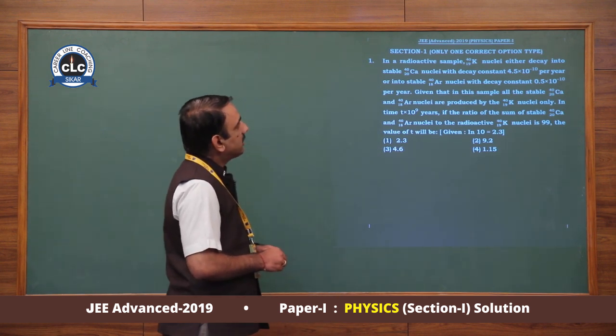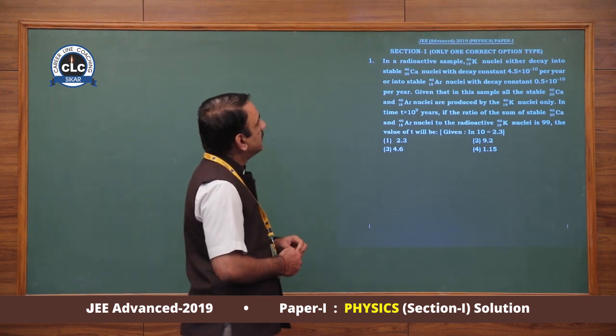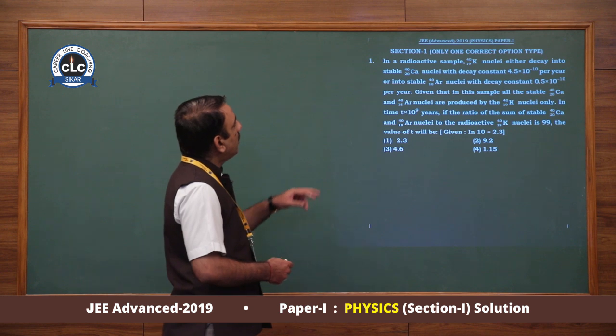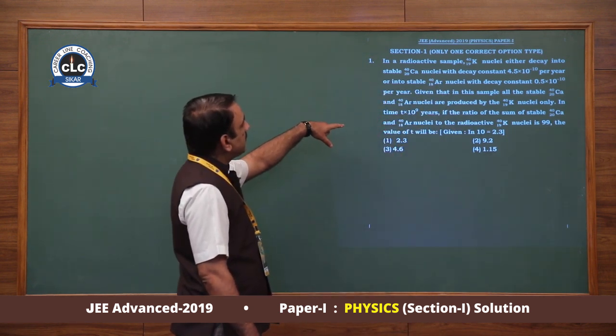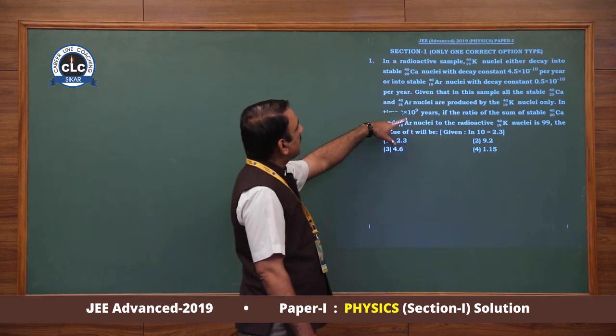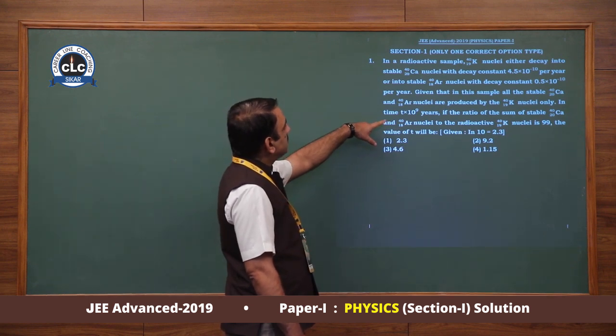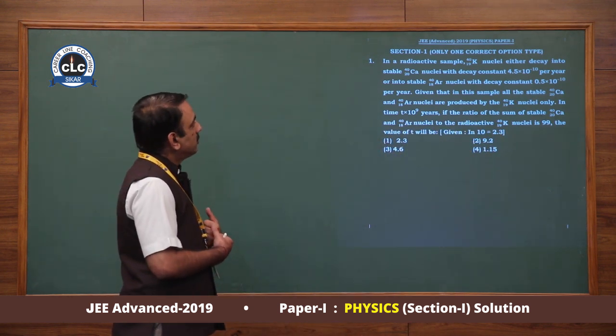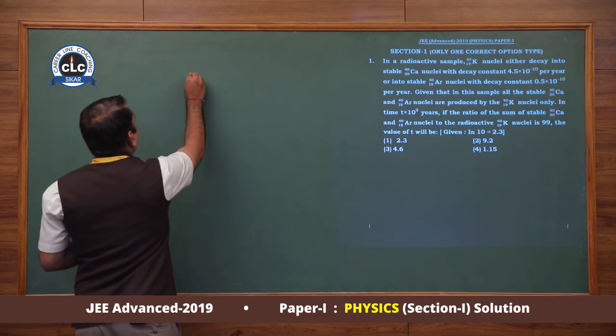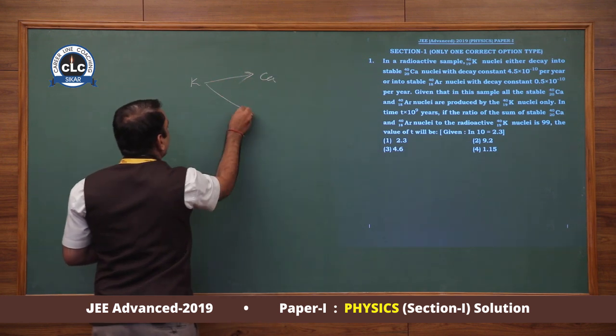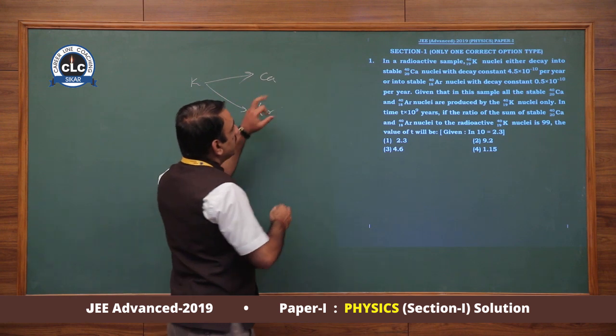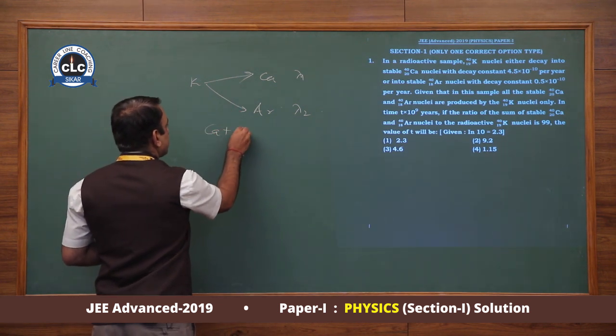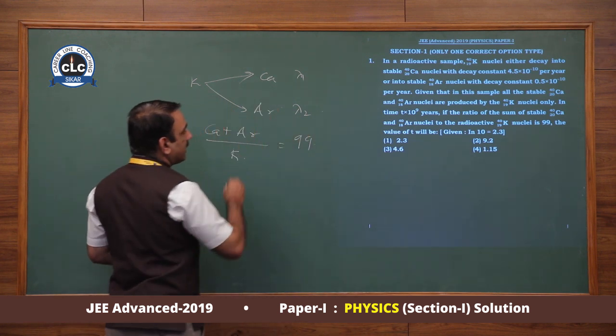The first question is nuclear radioactivity. In a radioactive sample, K40 nuclei either decay into stable Ca nuclei with decay constant lambda 1, or into stable Ar nuclei with decay constant lambda 2 per year. Given that in the sample all the stable Ca and Ar nuclei are produced by the K nuclei only. In time T, if the ratio of the sum of Ca and Ar nuclei to the radioactive K nuclei is 99, then the value of T will be what? So basically we have the radioactive element K, which decays to Ca and Ar with decay constants lambda 1 and lambda 2, and the ratio is given as 99 to 1.